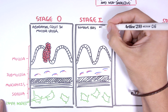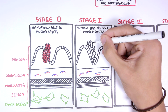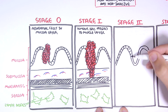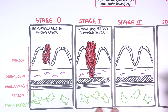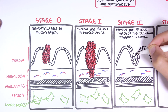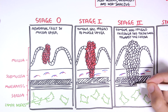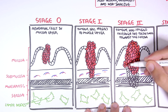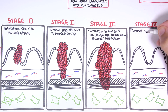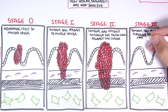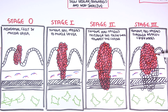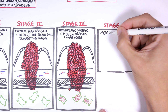Stage 1 is where the tumor has spread to the muscle layer, and things may be getting serious. Stage 2, the tumor has spread through the colon wall towards the serosa. Stage 3, the tumor has spread through nearby lymph nodes. And then we have Stage 4, which is the terminal stage, called metastasis.